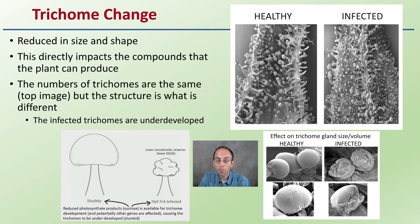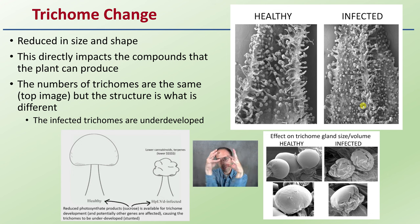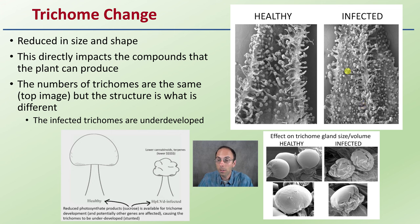These close-zoomed images of the trichomes show reduced size and shape compared to healthy versus infected. There's not really a reduction in the number of trichomes, but there really is a reduction in the quality of trichomes, and this directly impacts the compounds the plant can produce. The infected trichomes are basically underdeveloped — they kind of look like deflated, much smaller balloons. As a result, they actually have less in them. This is another stunting effect, this time of the trichomes, reducing overall yields.